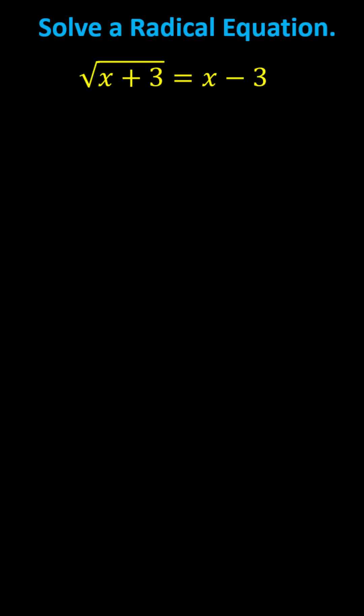Can you solve the given radical equation? To begin, because the square root is already isolated, we can undo the square root by squaring both sides of the equation.